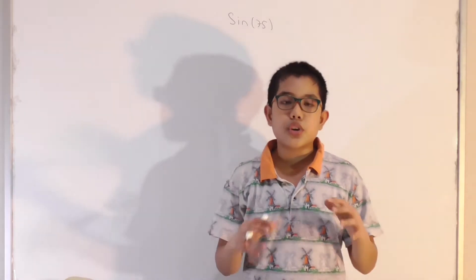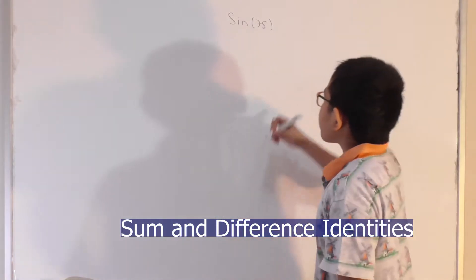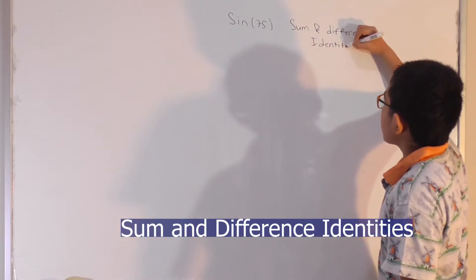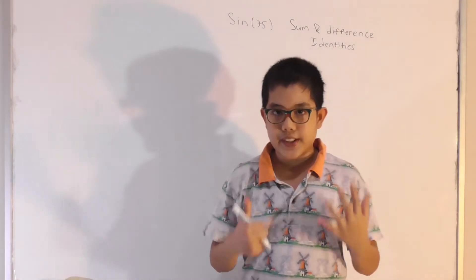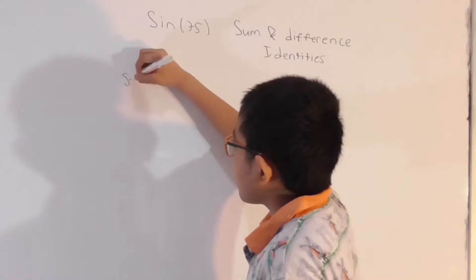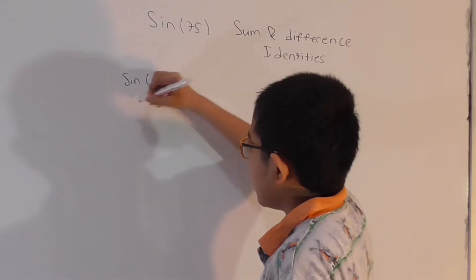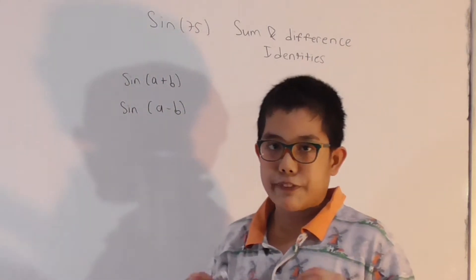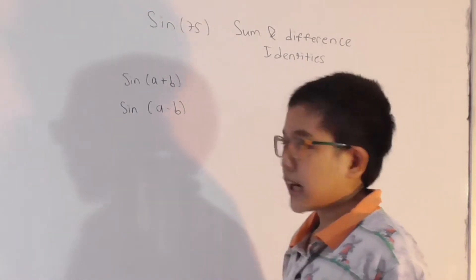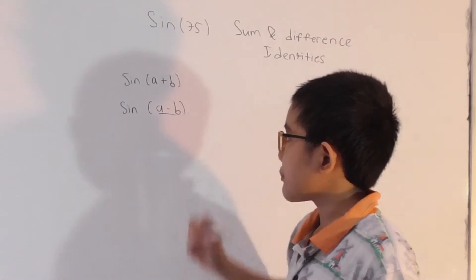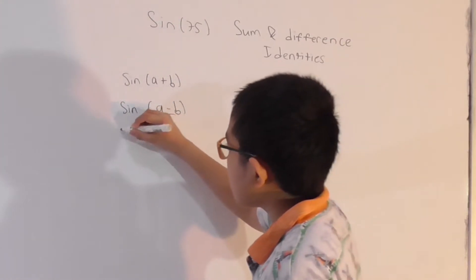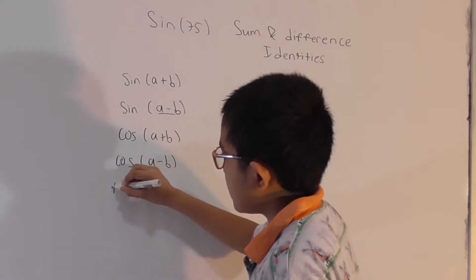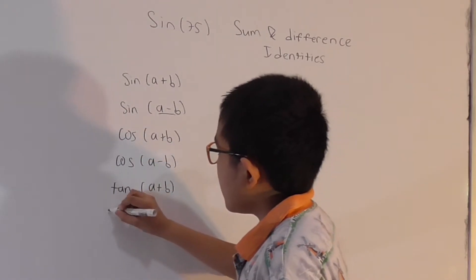However, in this video I'm just going to discuss the sum and difference identities. There are six types: sine of (A+B), sine of (A-B), cosine of (A+B), cosine of (A-B), tangent of (A+B), and tangent of (A-B). They are called sum and difference identities because they involve trig ratios of the sum of two different angles and the difference between them.